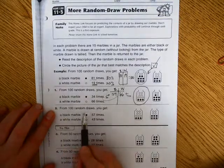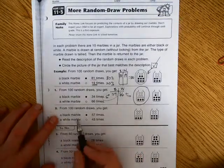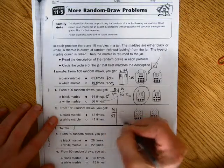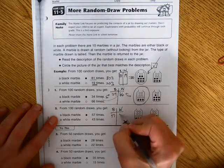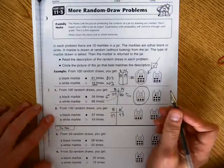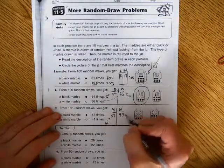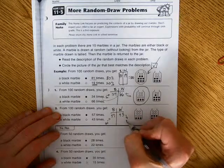Number 2. From 100 random draws, you get a black marble 57 times, and a white marble 43 times. So in this case, if I round this up to 60 and this down to 40, I have about 60-40 for the percentage of marbles.